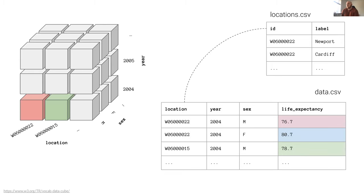That representation also allows us to think of the data as a data cube. There's a standard called the RDF data cube which represents tabular data in this cube format. You can imagine the dataset with location, year, and sex as columns being different dimensions in a 3D data cube — fixing certain dimensions to select certain results. Data cubes are well-studied, and tools like Power BI, Power Pivot, and Excel make use of those formats. Ultimately, what underpins them is this normalized data.